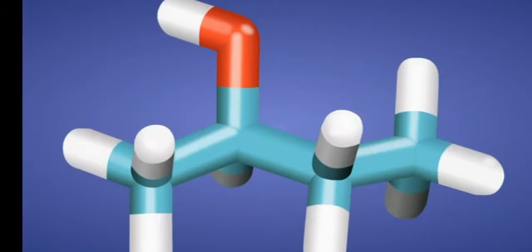Propane 2ol is a molecule containing three carbon atoms in which the alcoholic OH group is attached to the second carbon atom.